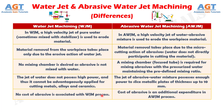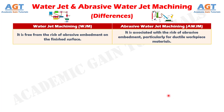Number 5: No cost of abrasive is associated with the water jet machining process. Whereas, cost of abrasive is an additional expenditure in the abrasive water jet machining process. Number 6: Water jet machining is free from the risk of abrasive embedment on the finished surface. Whereas, abrasive water jet machining is associated with the risk of abrasive embedment, particularly for ductile workpiece materials.